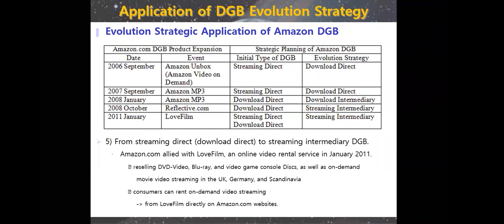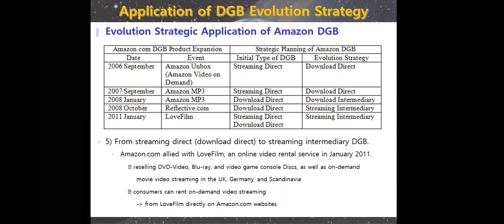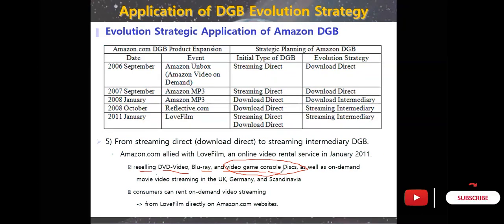Going from streaming direct and download direct to streaming intermediary, Amazon allied with LoveFilm, an online video rental service, in January 2011. This involved reselling DVD, Blu-ray, and video game consoles, as well as on-demand movie streaming in the UK, Germany, and Scandinavia, with on-demand video streaming available directly on Amazon's website.